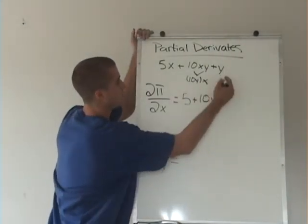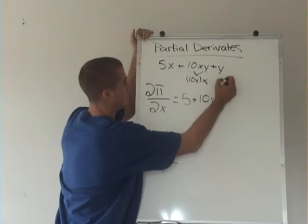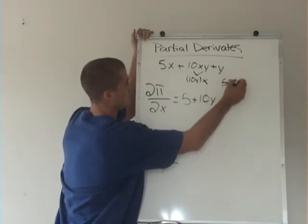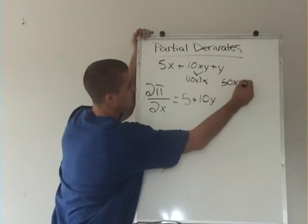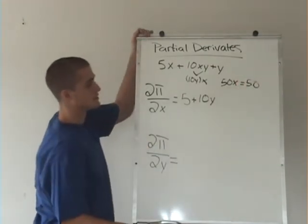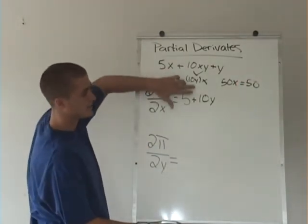So if instead of 10y we had 50x, the derivative of 50x is just 50. It's the same concept, it's just that you treat y like it's a number.